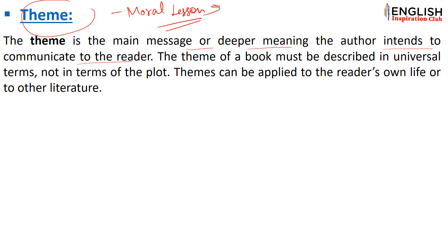The main message and the meaning of the story — when the author intends to communicate through readers, the reader reaches a result from the story. The theme of a book must be described in universal terms, not in terms of plot. Theme must describe something universal that any story can convey.